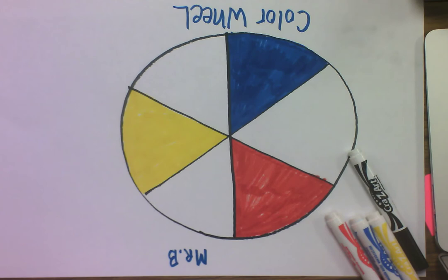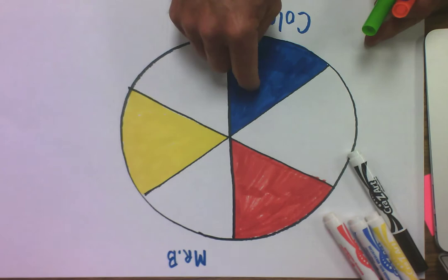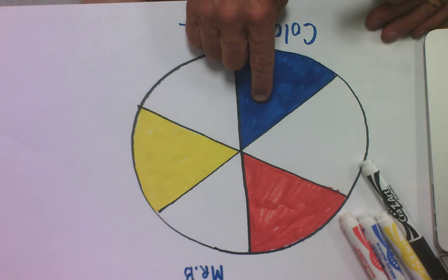Now, that's if you're using marker and crayon. But if you have paint, let's try using our primary colors to mix.